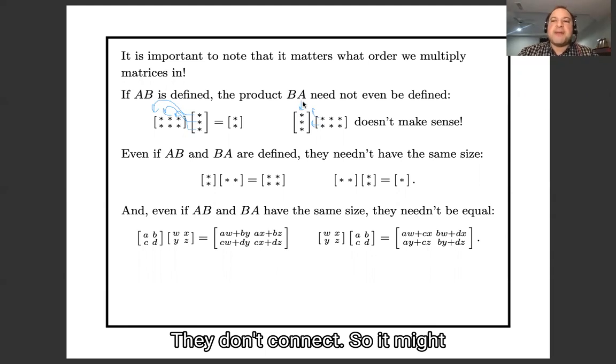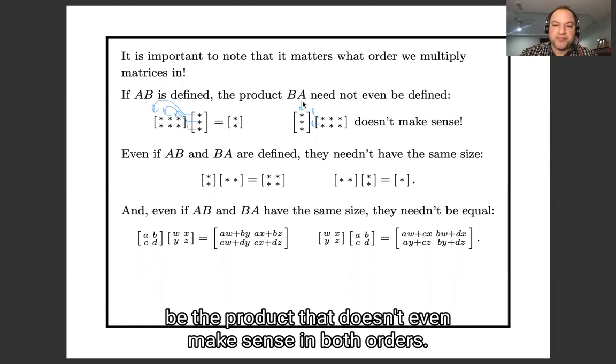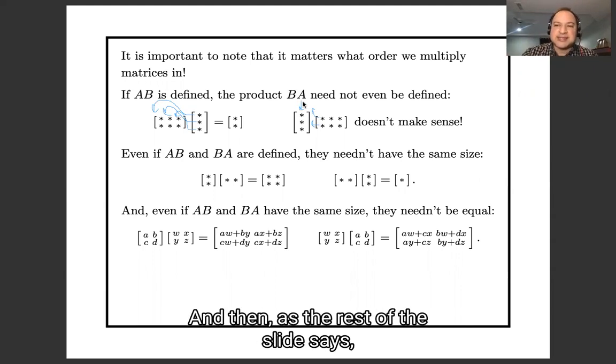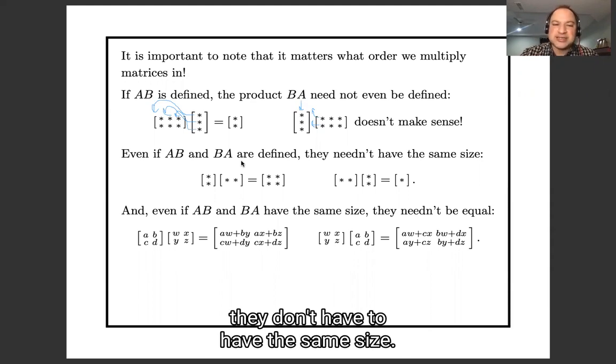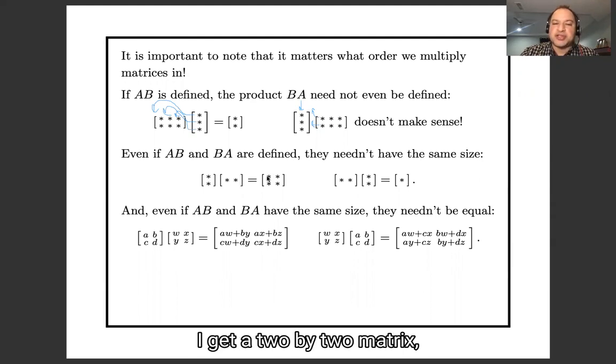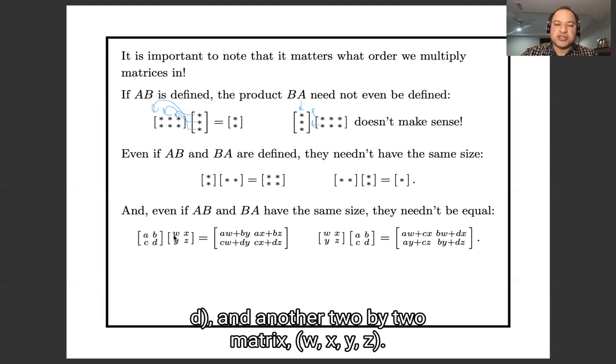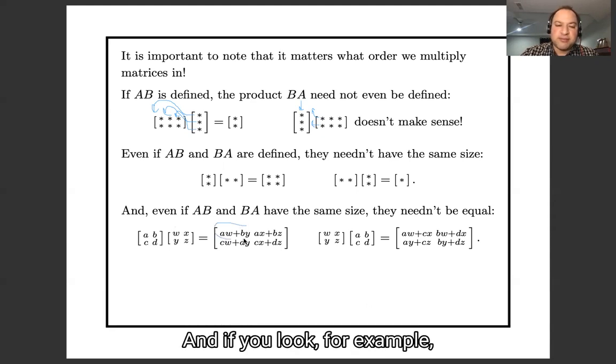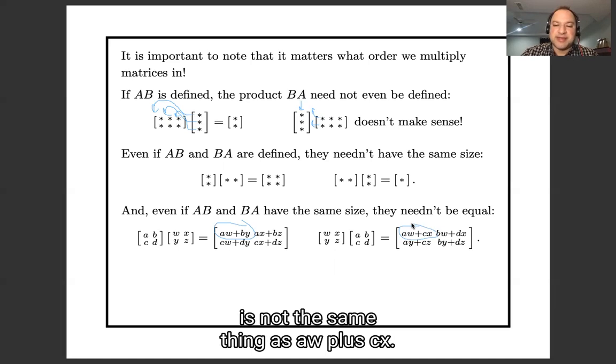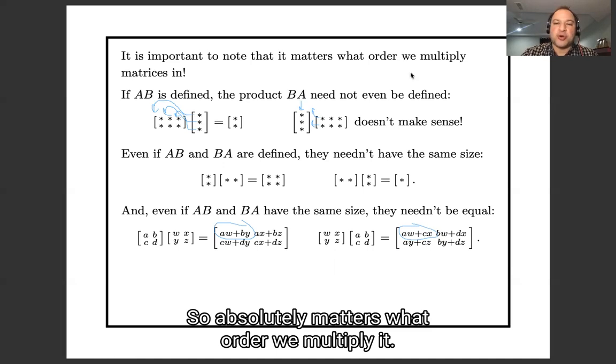And as the rest of this slide says, even when the products make sense, they don't have to have the same size. So if I take a two by one matrix and a one by two matrix and multiply them in this order, I get a two by two matrix. But if I multiply them in the other order, I get a one by one matrix. And even if they do have the same size, they don't have to be equal. So here I have a two by two matrix A B C D and another two by two matrix W X Y Z, and if you look for example at the upper left entries, you'll see that AW plus BY is not the same thing as AW plus CX. So it absolutely matters what order we multiply in.